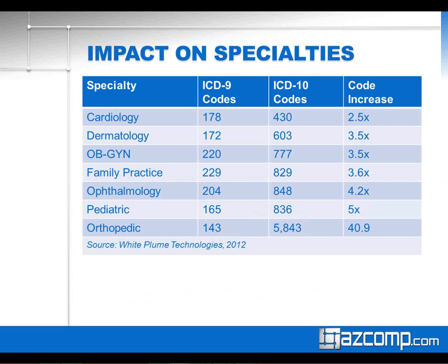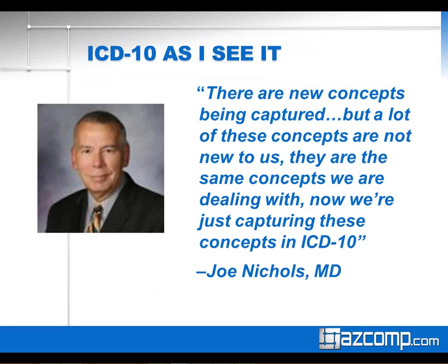There are some specialties where the number of codes you'll be using have gone up drastically, as you can see towards the bottom of this chart. Orthopedics — dealing with the musculoskeletal system and fractures — the number of codes has increased drastically; they're the hardest hit. But on a varying scale, you can see cardiology at the top, not quite as impacted. Again, depending on your specialty, that impact may be different.